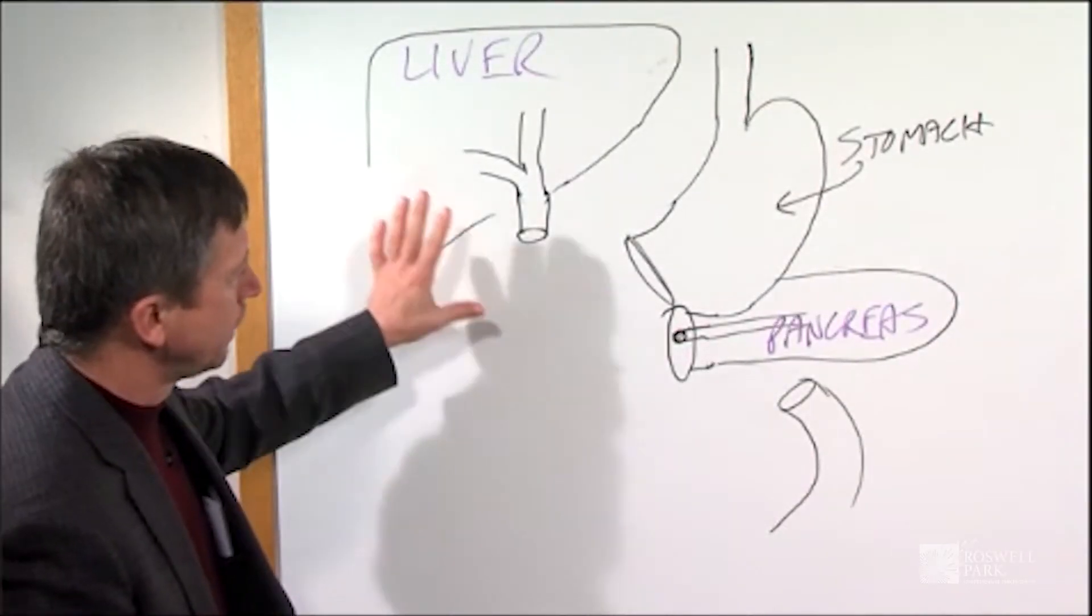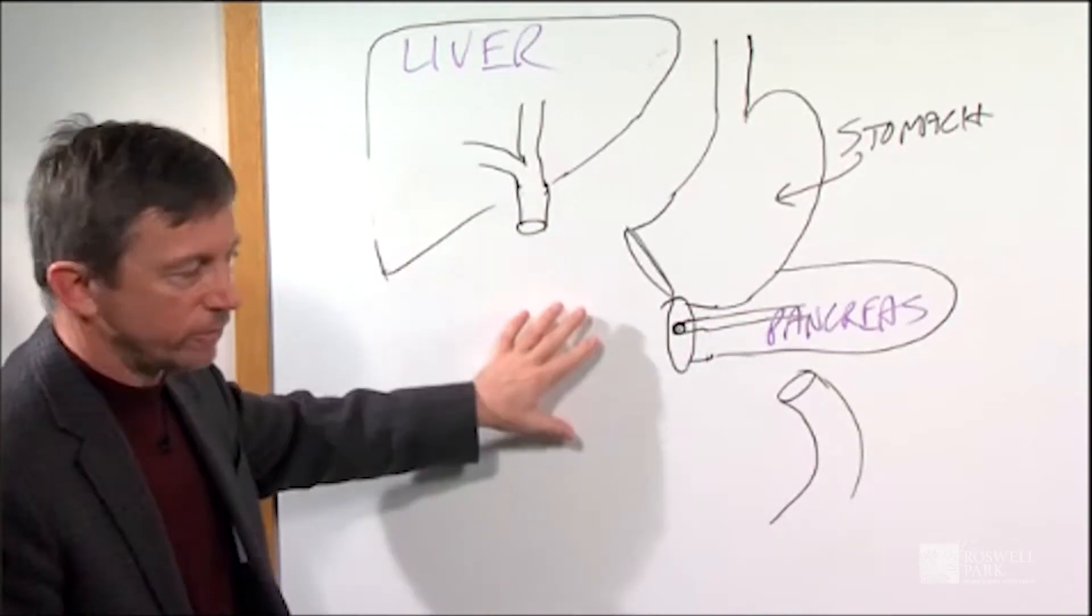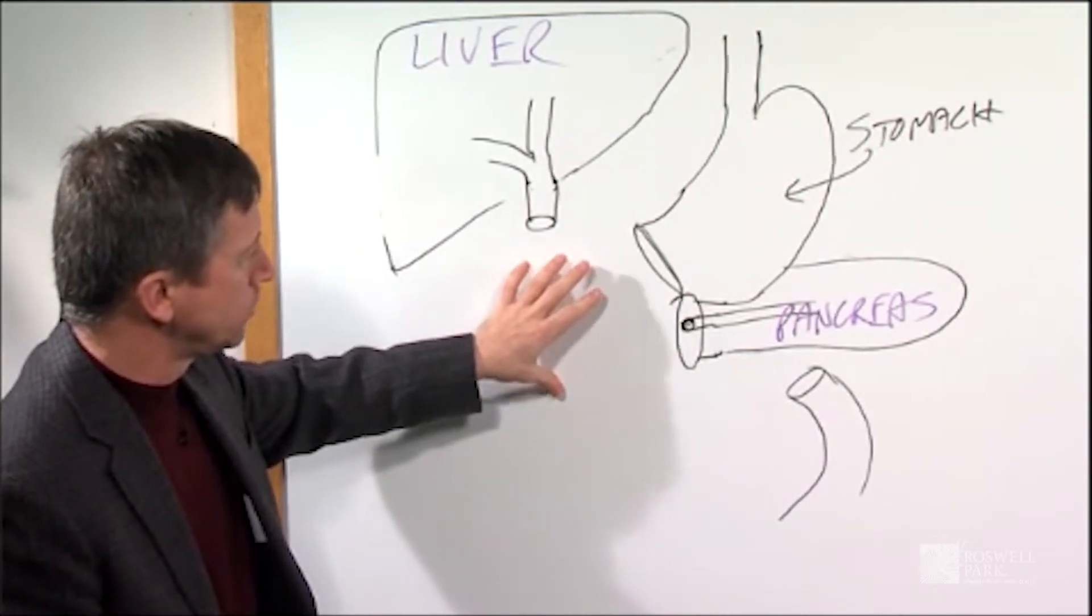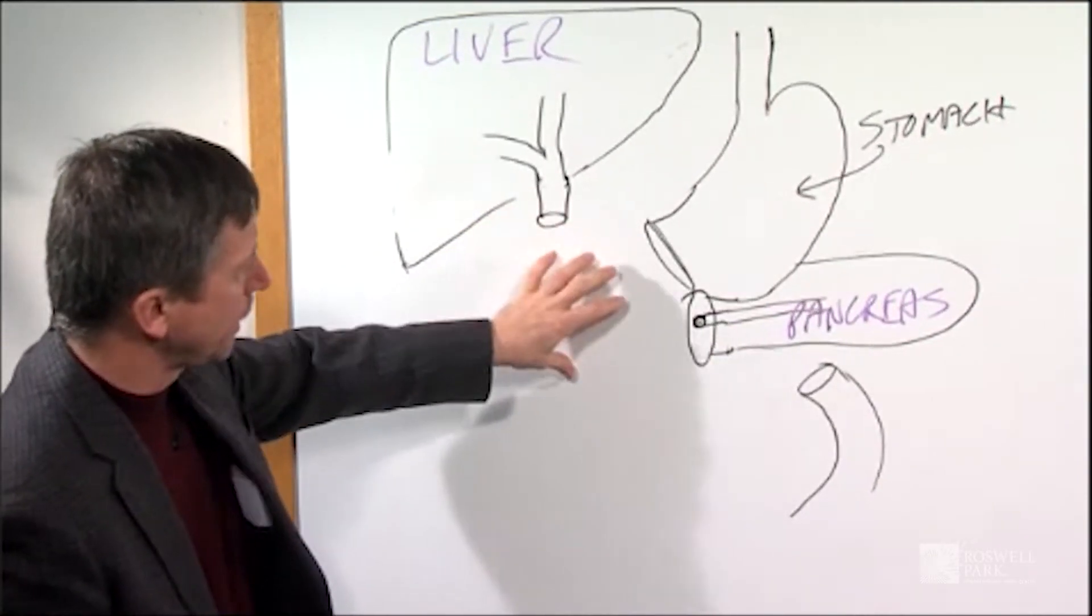The first part of the operation involves removal of the tumor, and this is what it would look like after we've removed the tumor, the head of the pancreas, the lower bile duct.